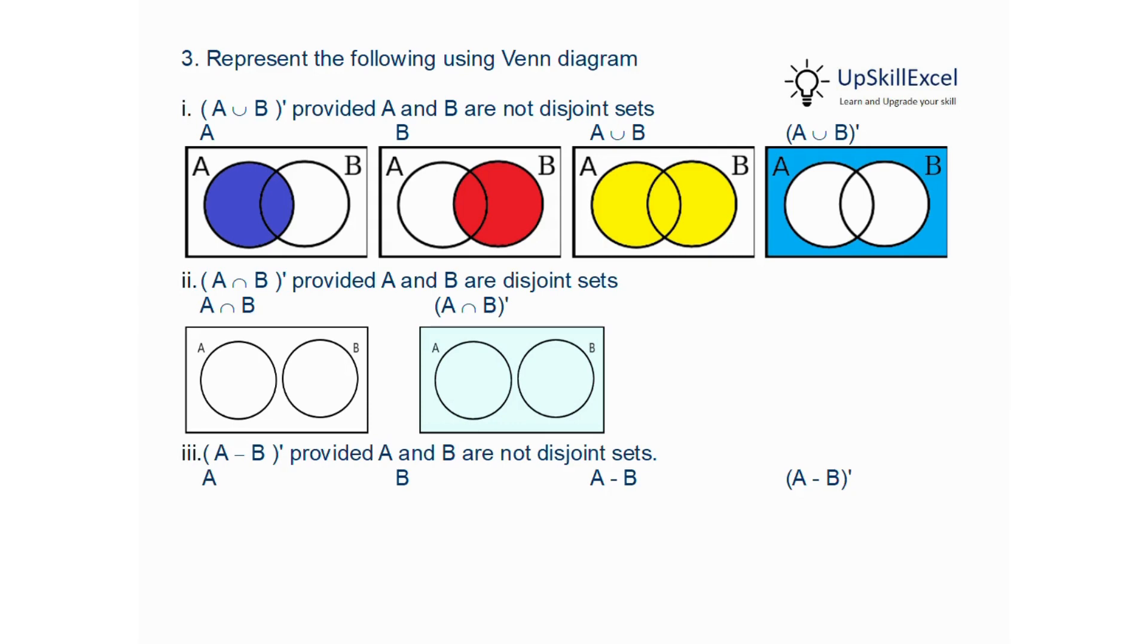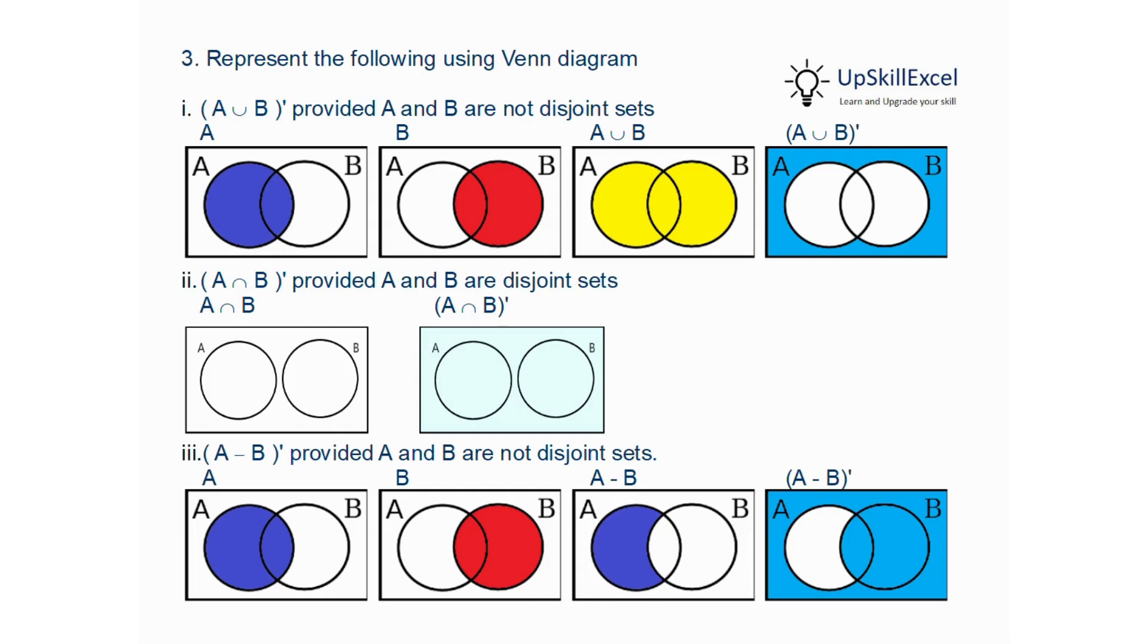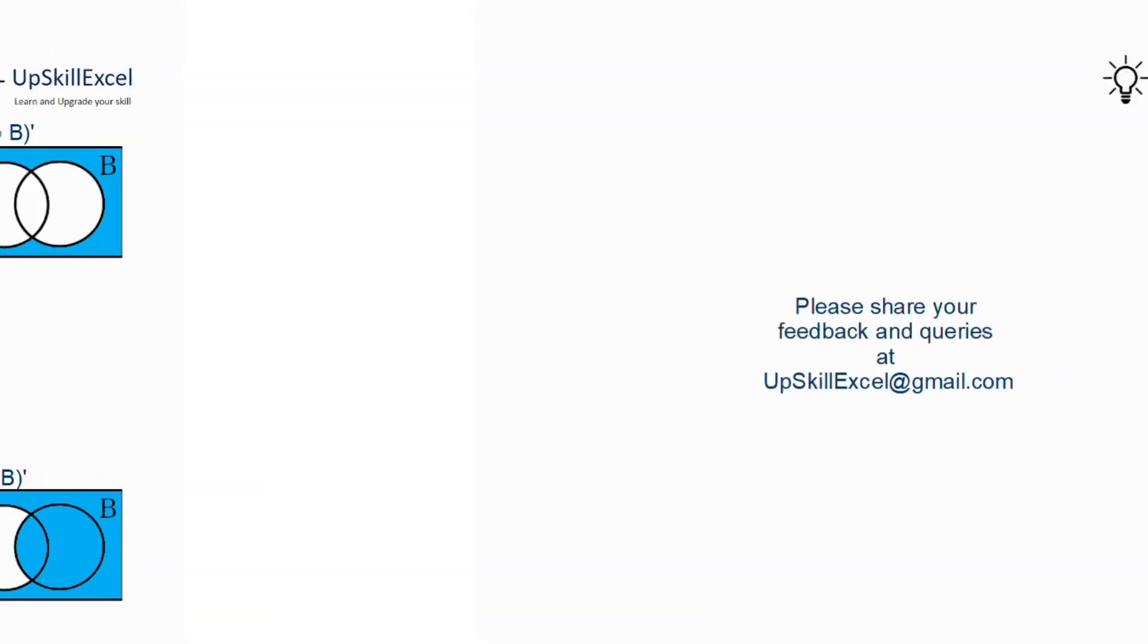Third question: A minus B complement. Here again, A and B are not disjoint sets. That means there is some overlap between A and B. Here again, A is represented by blue color, B by red color. And when we subtract B from A, we will be left with only a portion of A, as shown in the blue color. And then we take the complement, which is shown here in light blue color. Thank you.